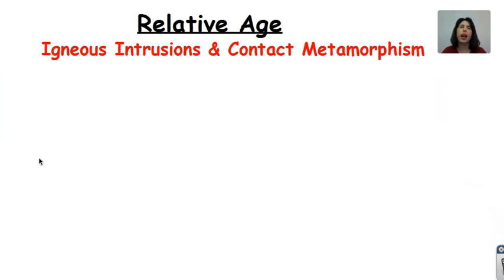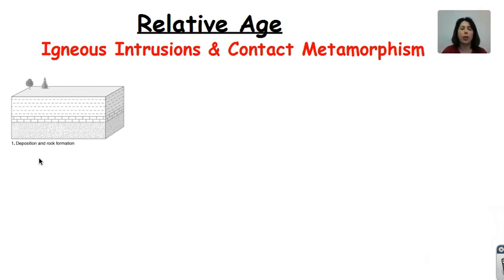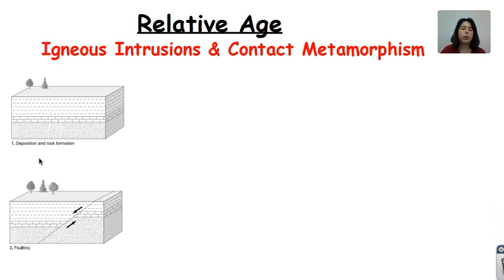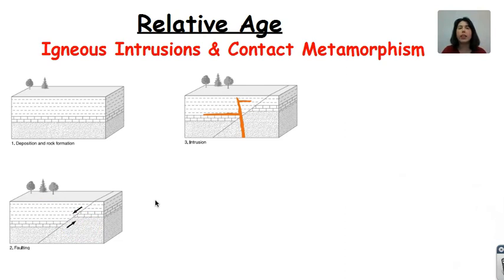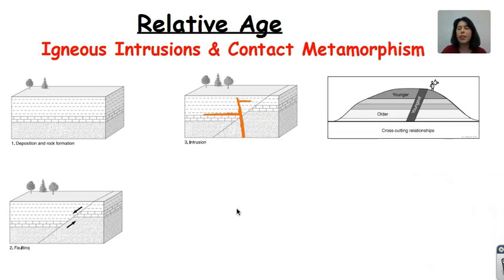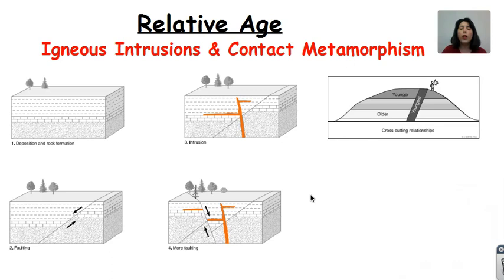We can also have igneous intrusions and contact metamorphism cut through or bisect our various layers. So we have deposition of various rocks — three rock layers — then faulting, which would be younger than those three layers. But then we can have an igneous intrusion represented by the orange mark, bisecting and cutting through everything, including the fault, which allows us to know that the igneous intrusion is younger than each one of these layers. This igneous intrusion is younger than all the layers it cuts through. We can also see more faulting — since this fault cuts through the igneous intrusion, that fault is actually younger than the intrusion itself.